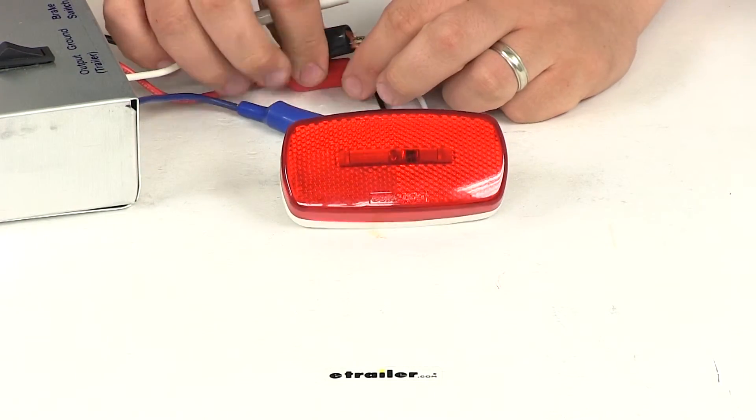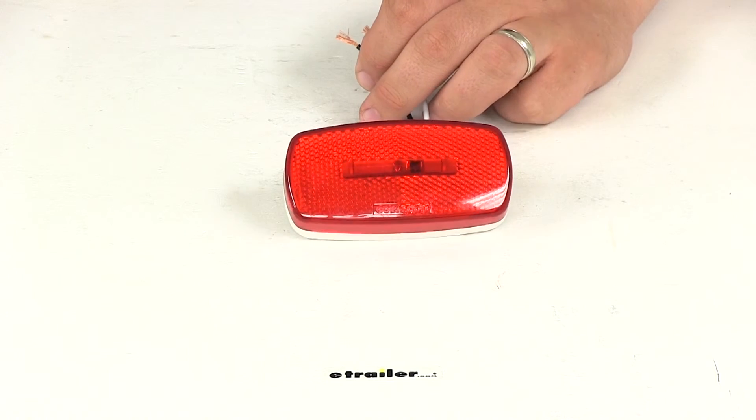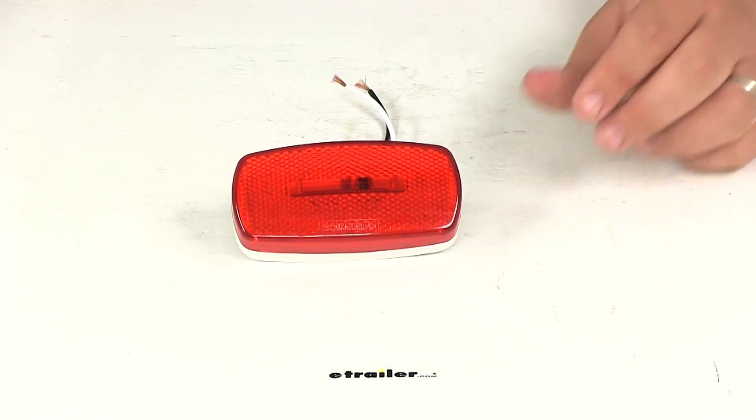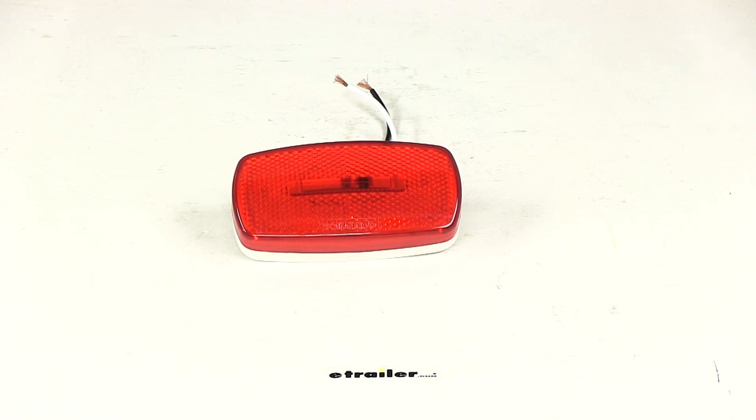That's going to do it for our review of part number MCL32RB. This is the trailer clearance or side marker light with the reflex reflector from Optronics.